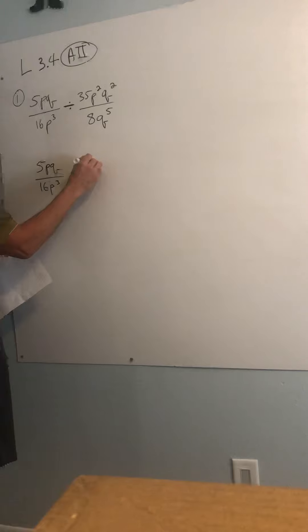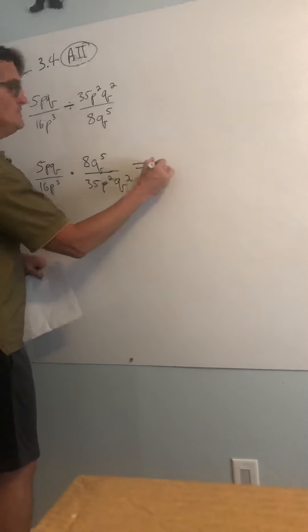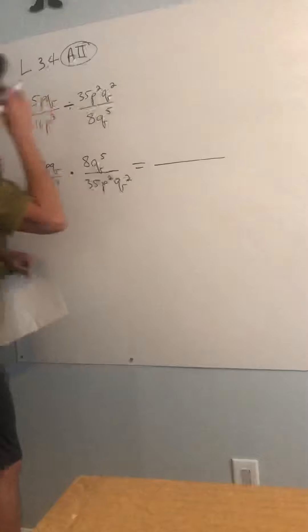So now it will be 8Q to the fifth over 35P squared Q squared. And then now we're just going to do what we learned in the last lesson. We're multiplying fractions. So I'm going to draw a big old fraction bar over here.